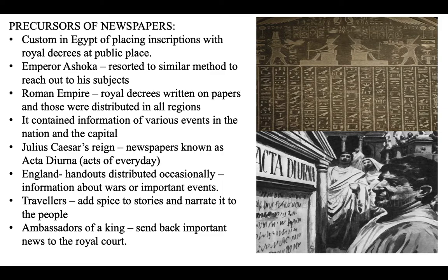Not only were the orders and commands of kings noted and given to the people, but also the daily happenings — events that took place — were recorded and distributed. During Julius Caesar's reign, newspapers known as 'Acta Diurna,' meaning 'Acts of Everyday,' used to be placed at public places in Rome. Whatever happened in common life was recorded, documented, and placed at various gathering places for the people.